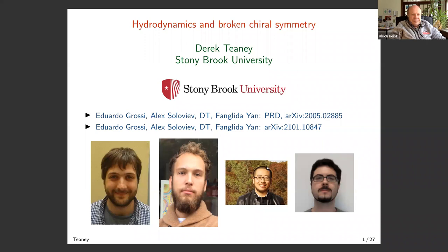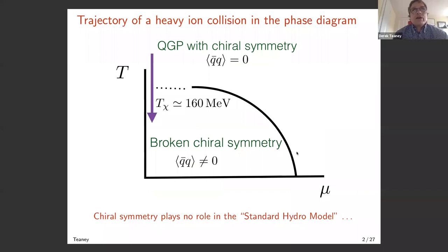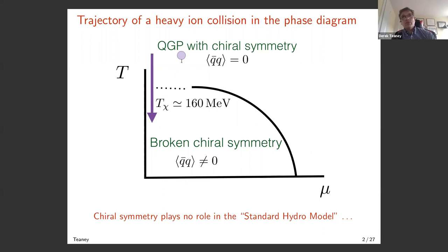This talk is based on two papers. It covers the trajectory of a heavy ion collision at high temperature — say at the LHC — where we go from a QGP with restored chiral symmetry to a region of broken chiral symmetry, the hadron gas, with a crossover transition at around 158 MeV. The characteristic feature is that this symmetry-breaking transition plays very little role in any hydrodynamic description of the heavy ion data, except for the equation of state. The goal of this talk is to try and study that.